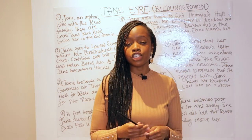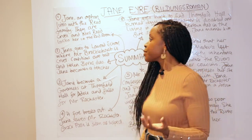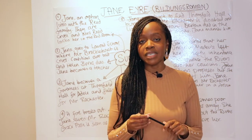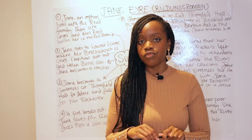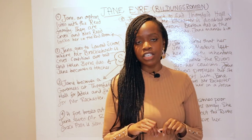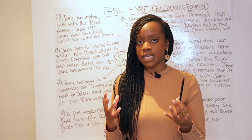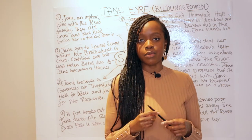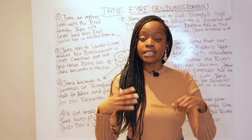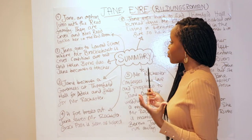One key turning point occurs when Jane stands up for herself, especially against John Reed, and is sent to the red room — believed to be a haunted room in the house because this is where Mr. Reed died. Jane suffers terribly, being terrified to be left there. This becomes a key turning point because Mrs. Reed decides that Jane can no longer stay with them and will be sent off to a school for orphans.